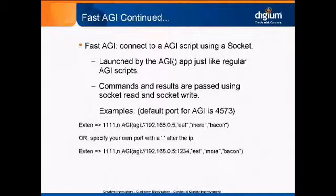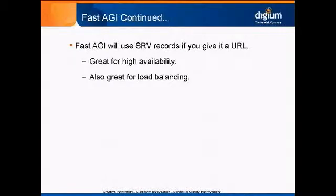The AGI script is actually a TCP server that accepts connections. You can also specify the port if you need to. Fast AGI uses SRV records if you give it a URL, which is great for high availability and load balancing. For the URL-based approach you use the HAGI prefix and it does a DNS lookup on the URL.